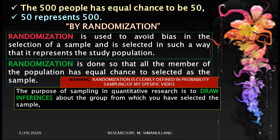The purpose of sampling in quantitative research is to draw inferences about the group from which you have selected the sample. 'Draw inferences' means, as in the example, that 50 represents 500. In quantitative research, the sample represents the population — that is the meaning of drawing inferences.